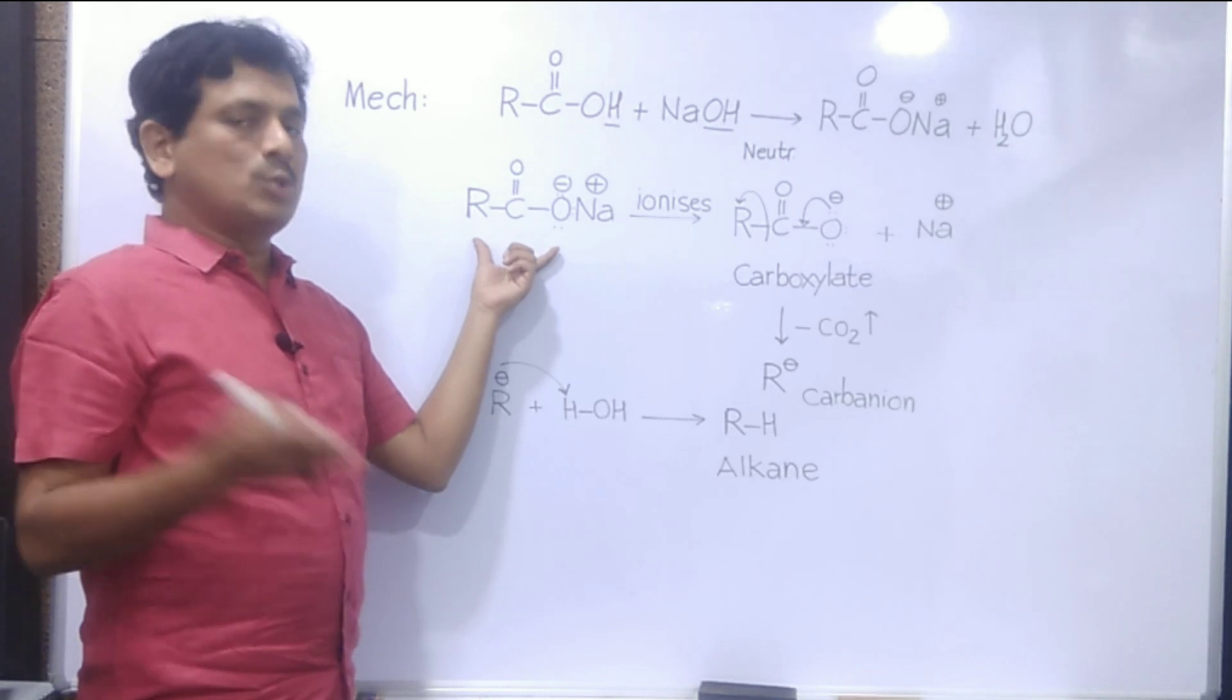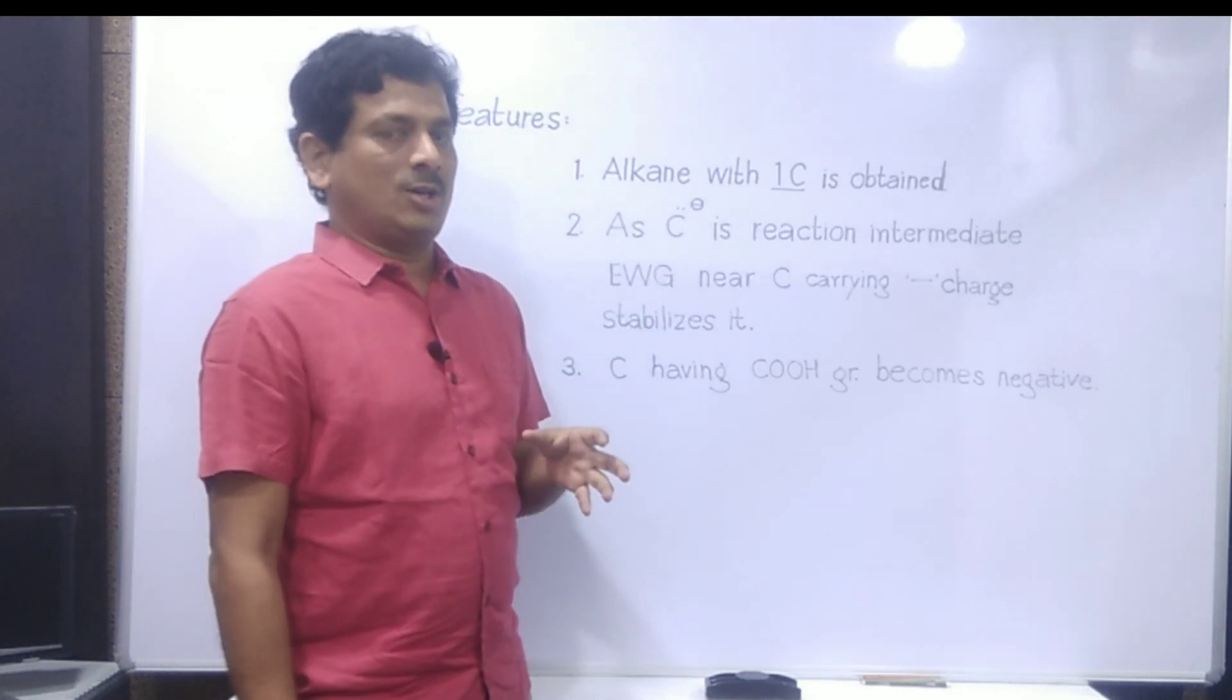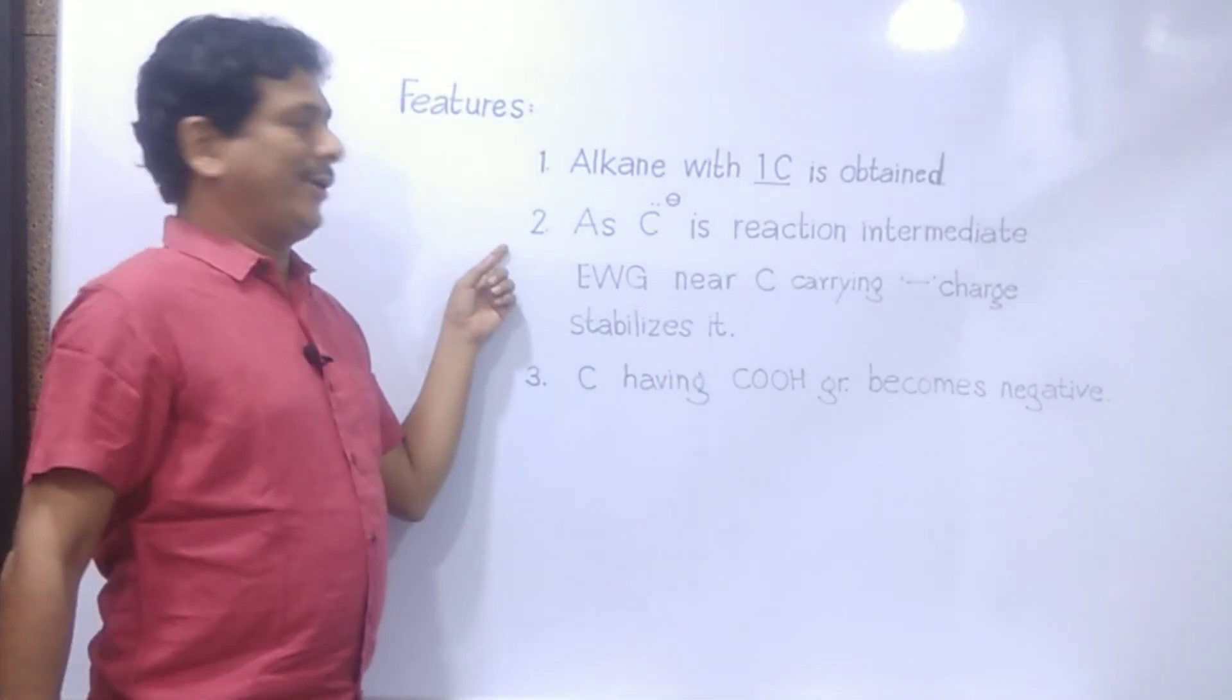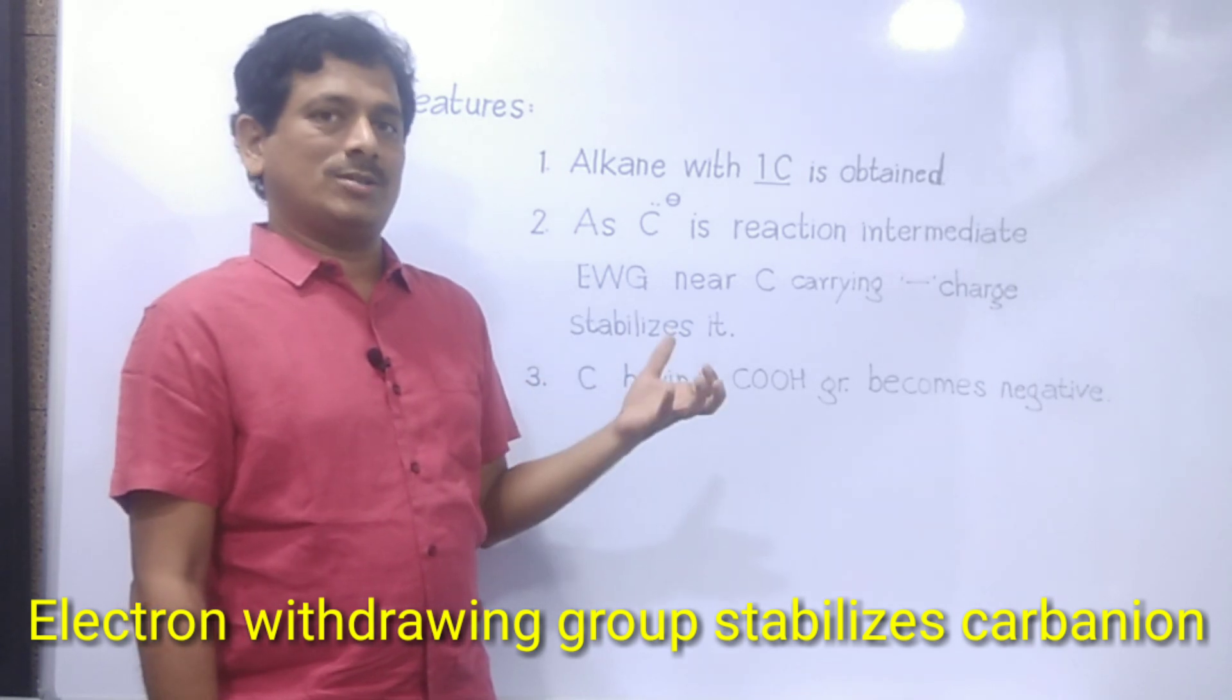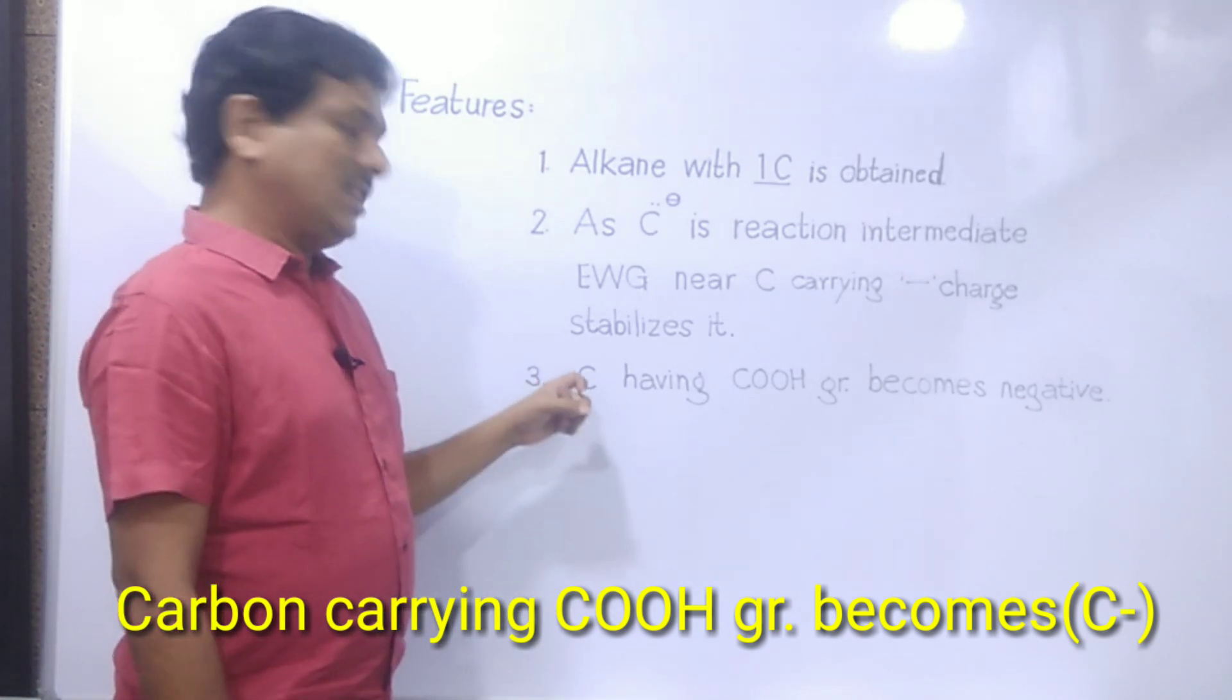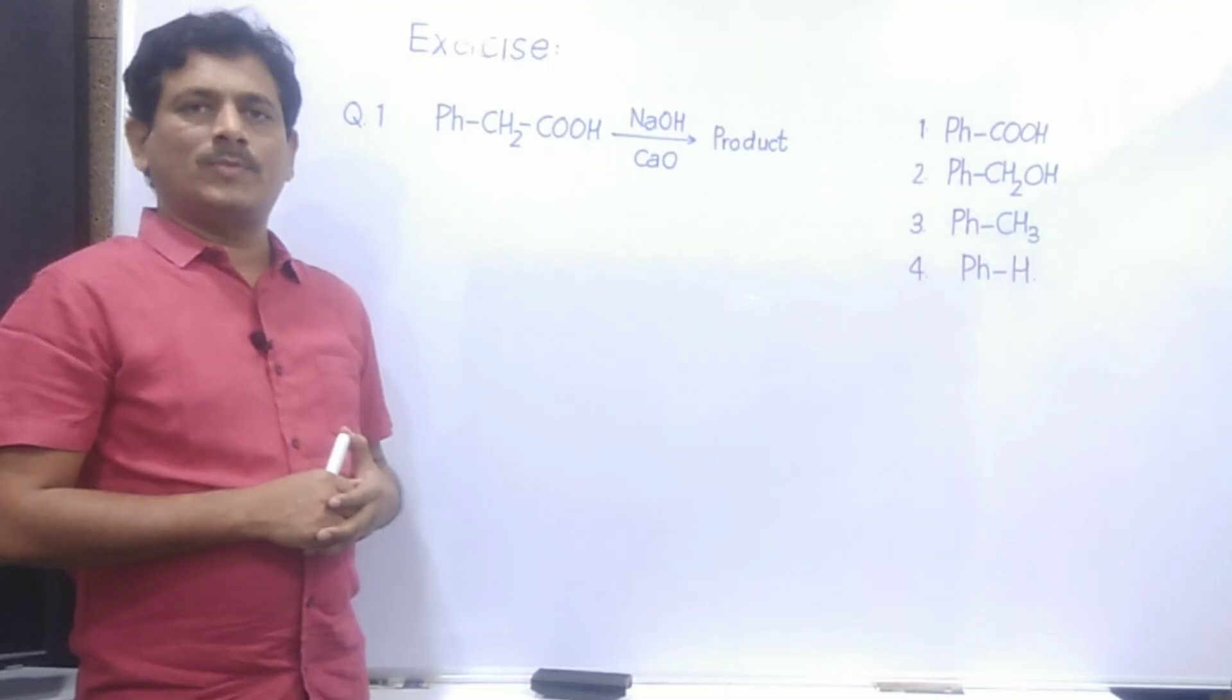Friends, let us see some of the features of this reaction. The very first feature: the alkanes produced in this reaction will have one carbon less than the carbons present in the carboxylic acid. Second point: as carbanion is the reaction intermediate, anything that stabilizes C- will favor the reaction or will stabilize this carbanion. Third, very important: the carbon having COOH group or COONa group gets negative charge. That means that carbon becomes carbanion.